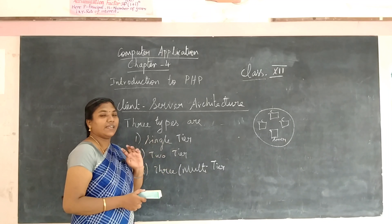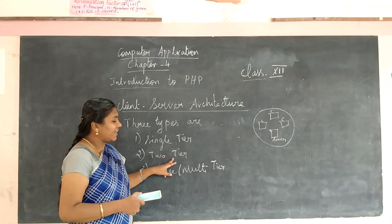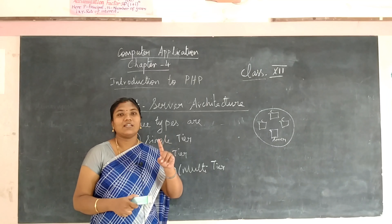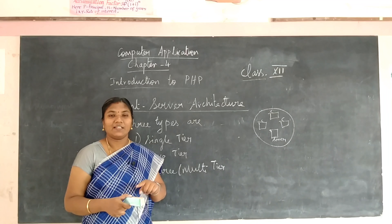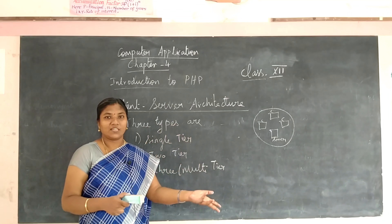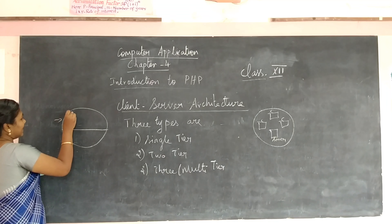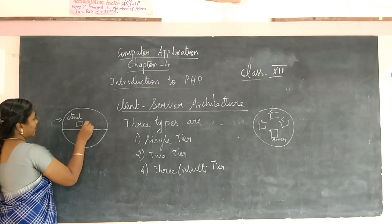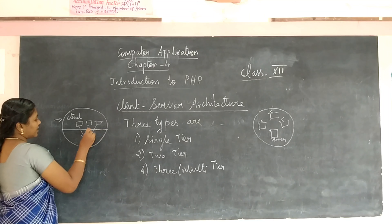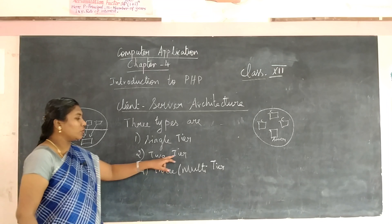Then we move on to two-tier architecture. In two-tier architecture there are two levels. The first level is the client and the second level is the server. The client asks a request to the server and the server gives the response to the client. Multiple client systems can be connected, sending requests to a single server. That is two-tier architecture.